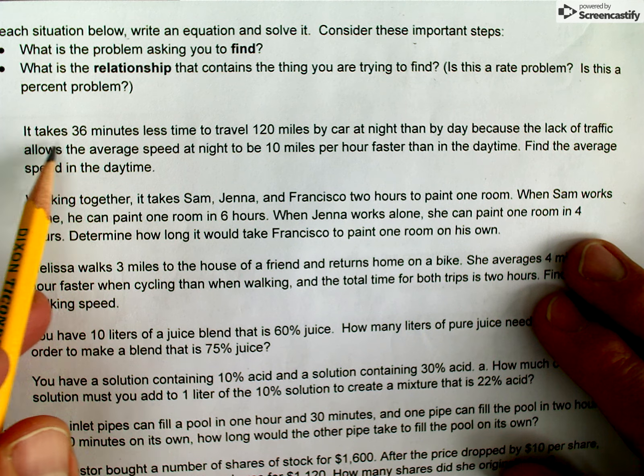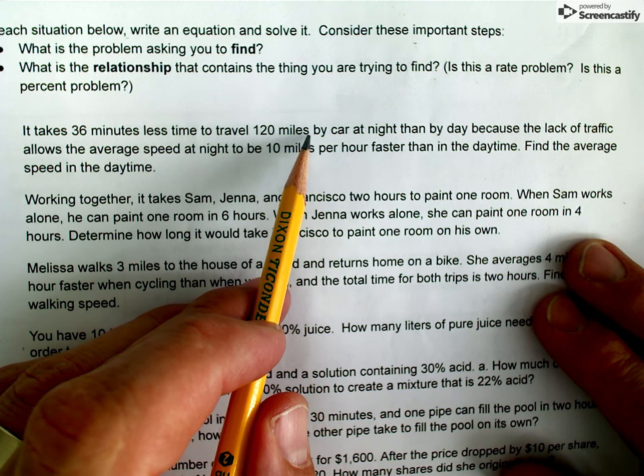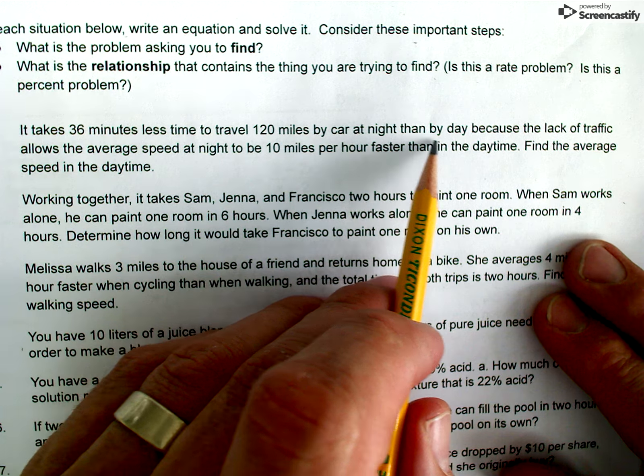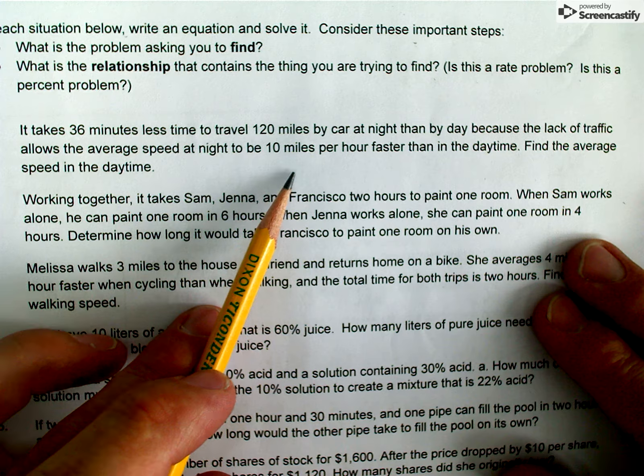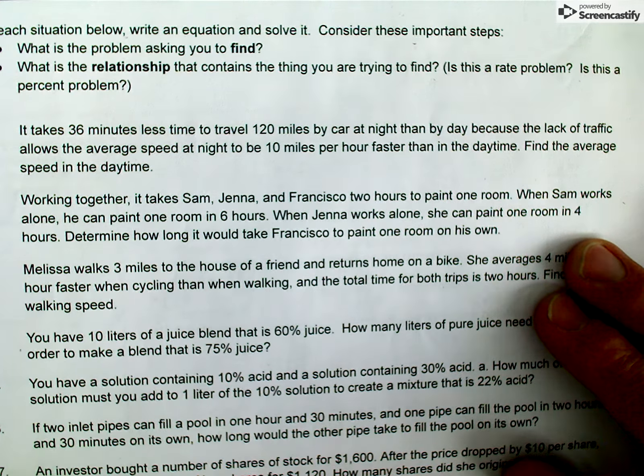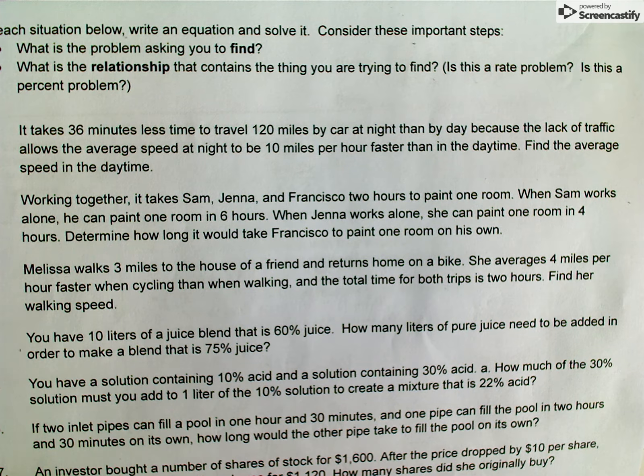It says it takes 36 minutes less time to travel 120 miles by car at night than by day because the lack of traffic allows the average speed at night to be 10 miles per hour faster than in the daytime. Find the average speed in the daytime.